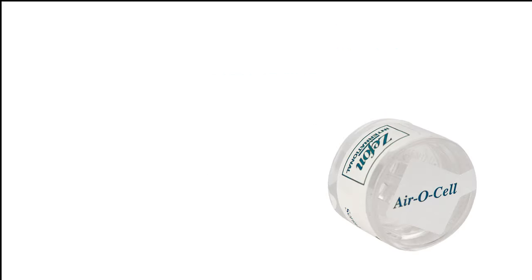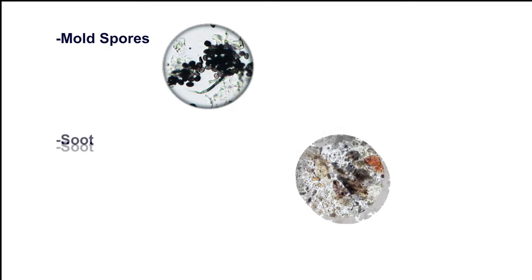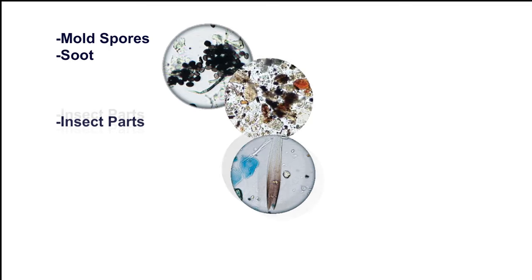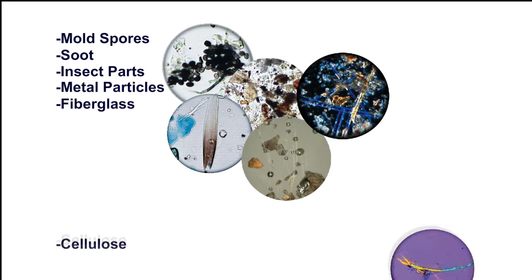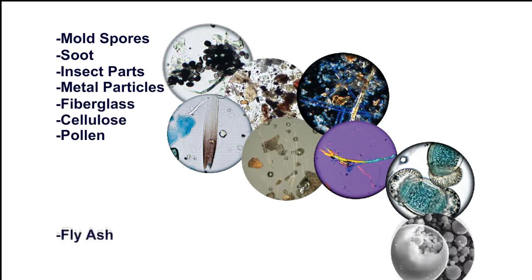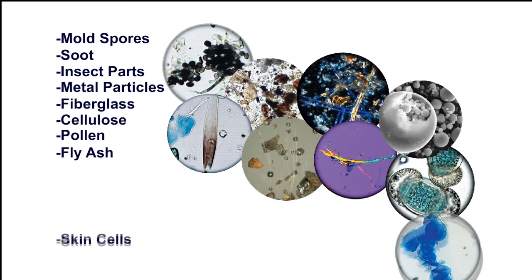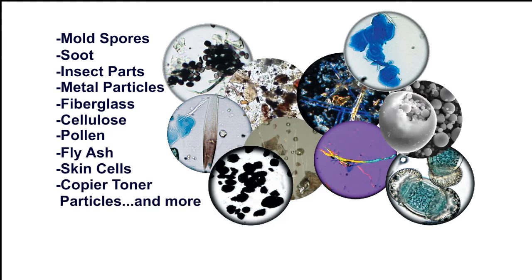The AeroCell cassette collects both viable and non-viable particulate such as mold spores, soot, insect parts, metal particles, fiberglass, cellulose, pollen, fly ash, skin cells, copier toner particles, and many more.